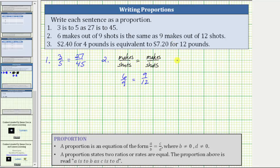For number three, we are given $2.40 for four pounds is equivalent to $7.20 for 12 pounds. For the proportion, let's compare the cost to the number of pounds.